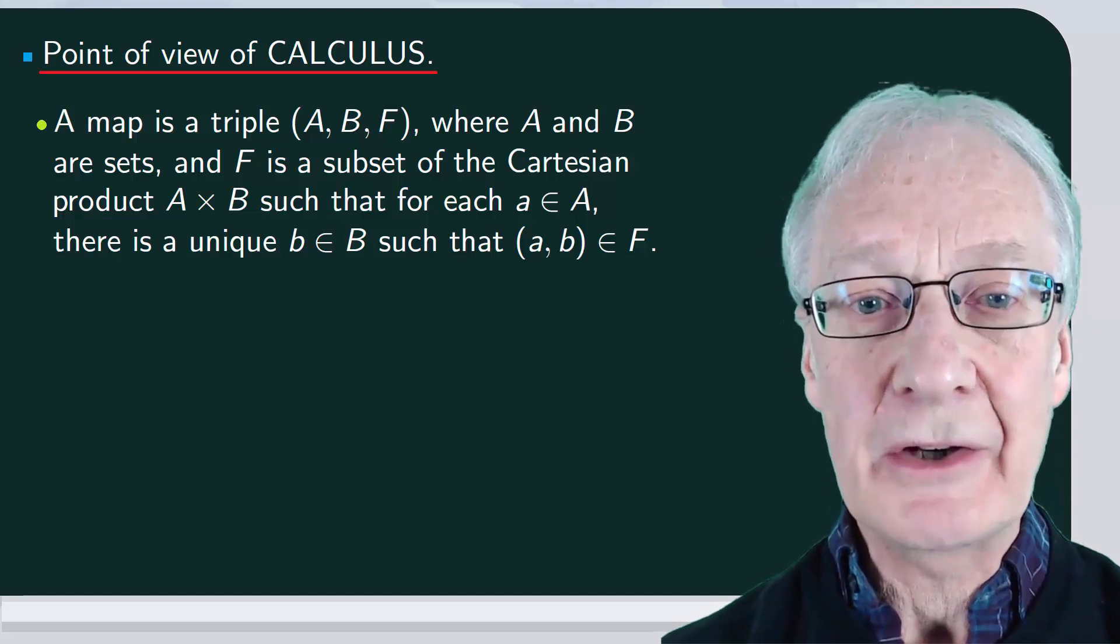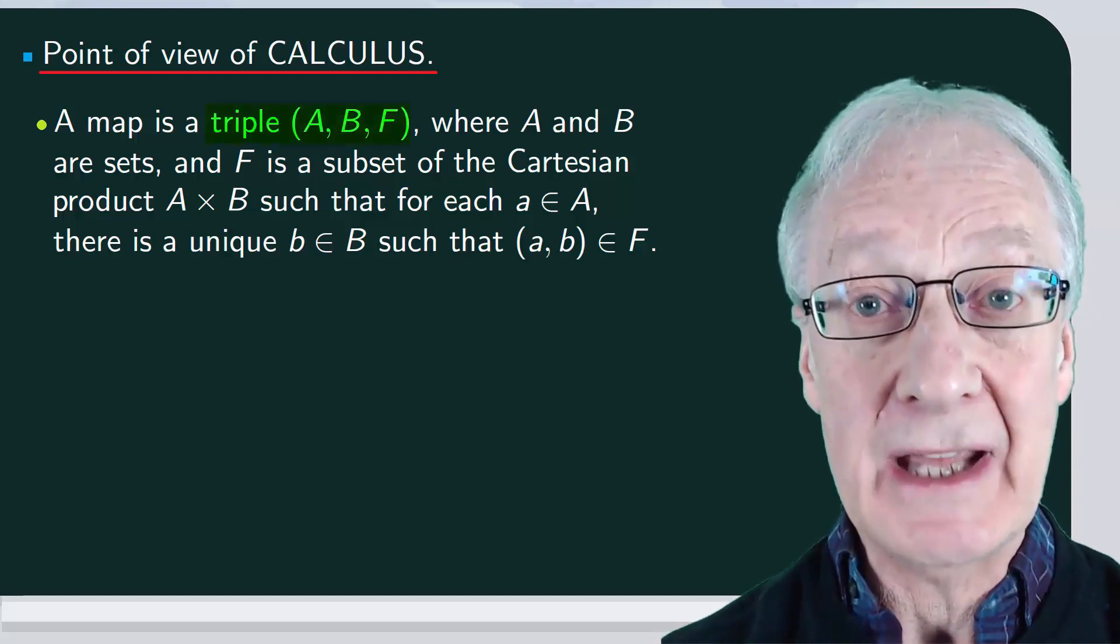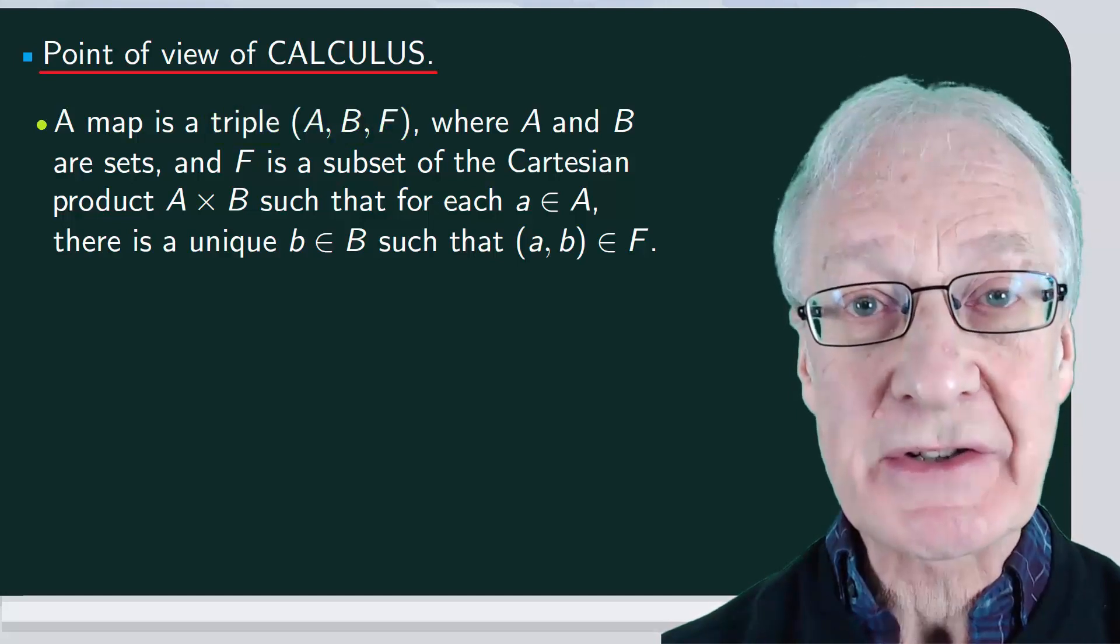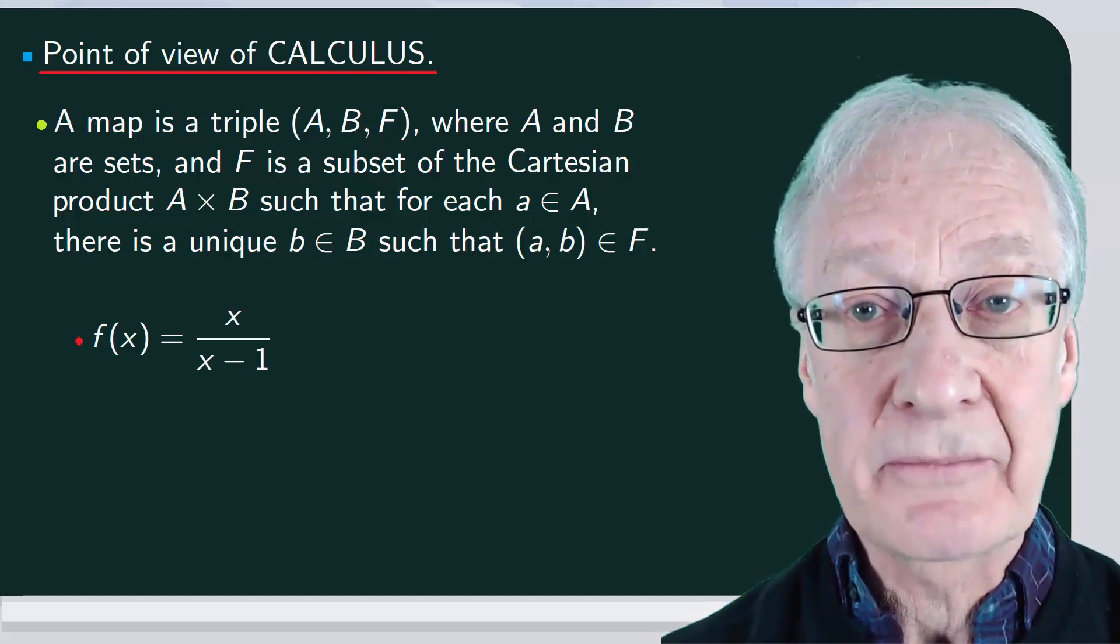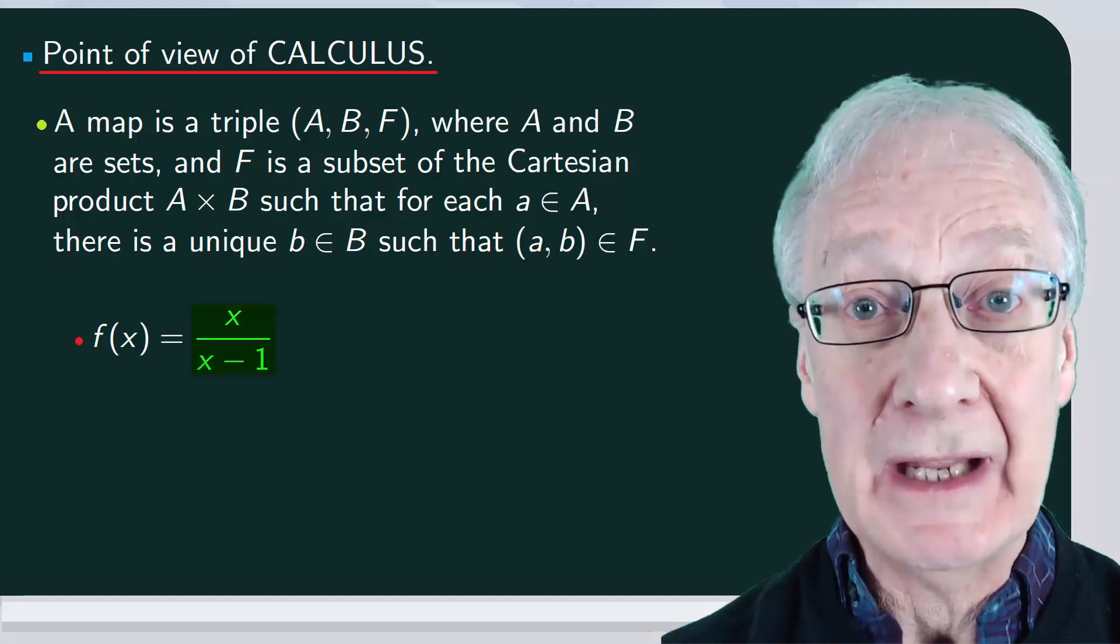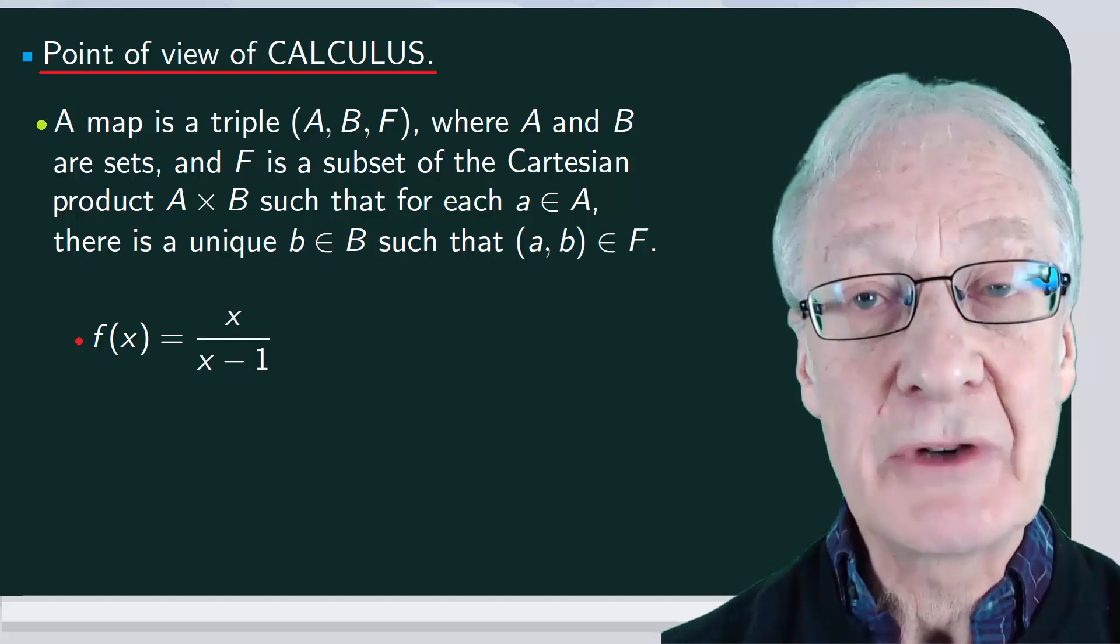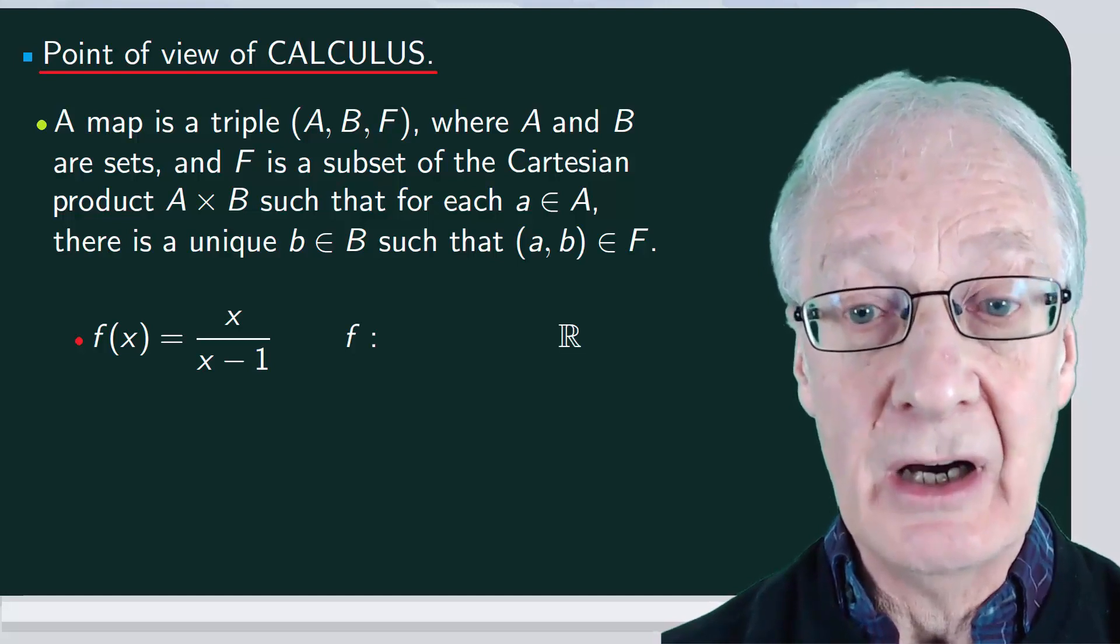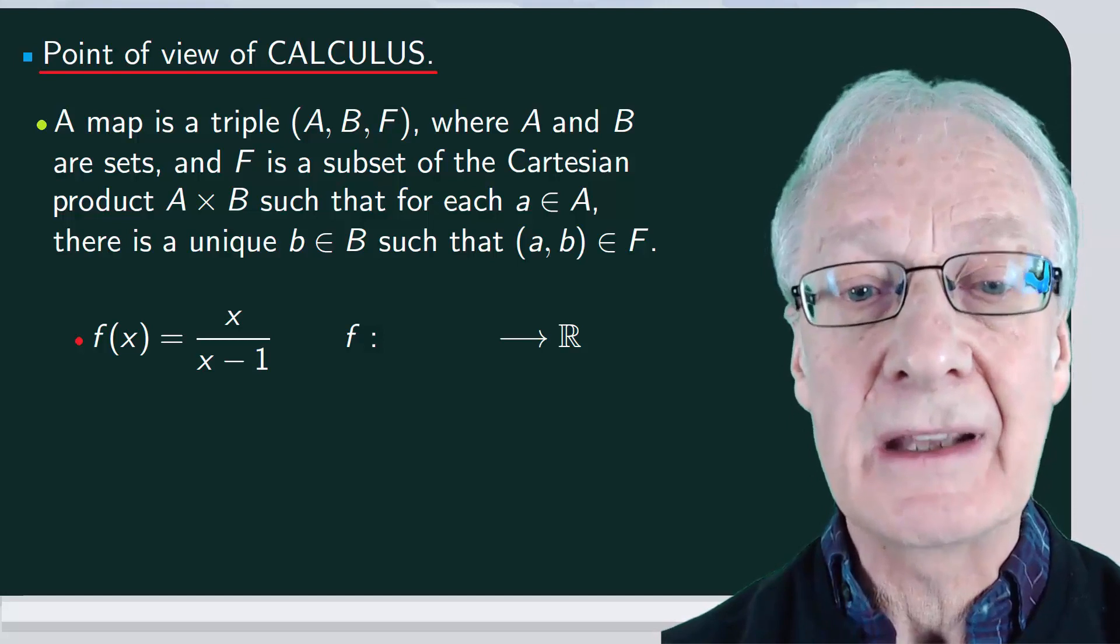A real function of a real variable as a particular case of a map will also be given by three elements. But if we consider a function such as f of x equals x over x minus 1, we see only one thing, not three. Well, in the case of real functions of a real variable, the codomain is r, and the domain is, by convention,